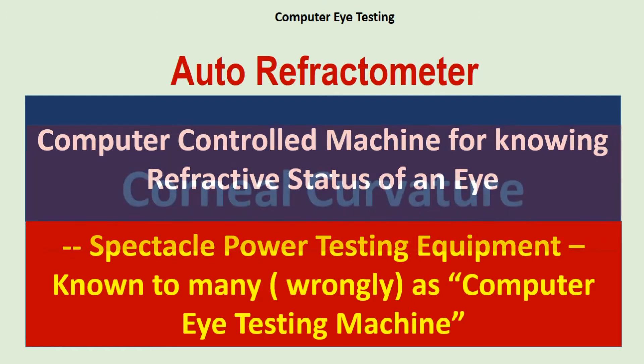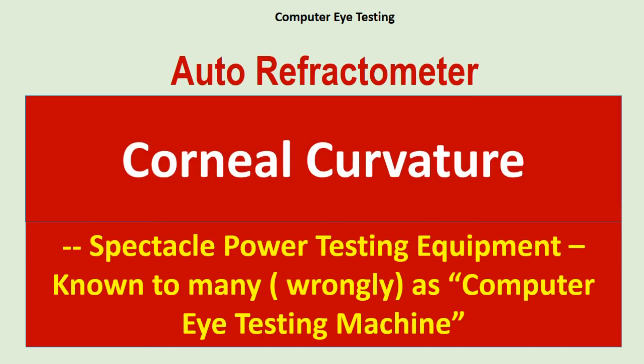In some machines, besides power testing, corneal curvatures can also be measured. That may help in finding out astigmatism, proper fitting of contact lenses, and sometimes in IOL power calculations.